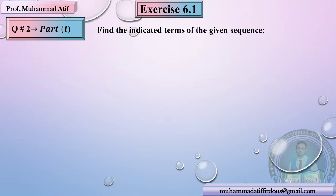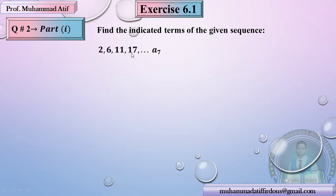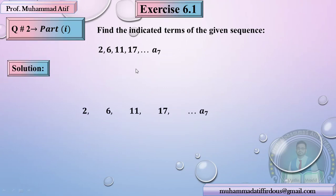Now let's see which sequence has a pattern. You are given 2, 6, 11, 17 and you have to find the 7th term. If we see the difference between 2 and 6, we added 4. Between 6 and 11, what is added? 5. Look at the diagram. Between 11 and 17, tell me — what is added? 6. So a beautiful pattern is visible: the differences are increasing by 1 each time.